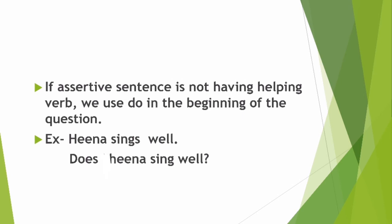If the assertive sentence does not have a helping verb, we use 'do' at the beginning of the question — either do, does, or did. 'Does' is used with singular nouns, 'do' with plural, and 'did' in the past. Like 'Heena sings well' becomes 'Does Heena sing well?' — helping verb 'does' first, then subject, then rest of the sentence. Very important: the verb will come in its original form. It was 'sings' before, but now it's 'sing.'